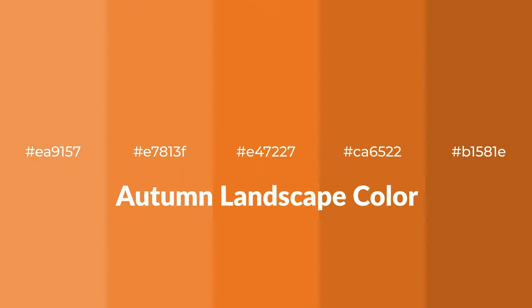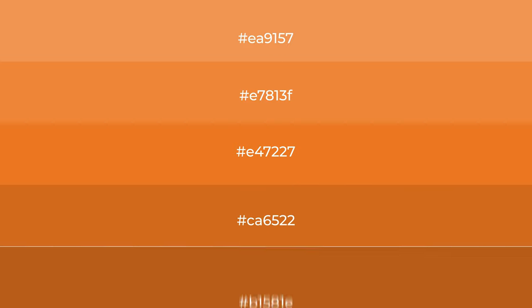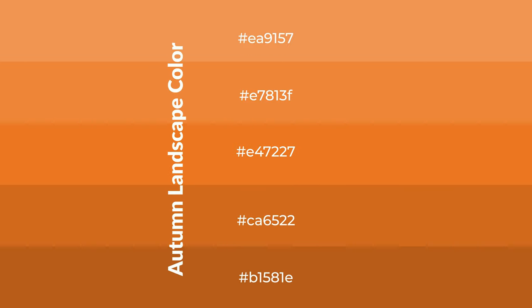Warm shades of autumn landscape color with orange hue for your next project. To generate tints of a color we add white to the color, and tints create light and exquisite emotions. To generate shades of a color we add black to the color, and it is used in patterns, 3D effects, and layers. Shades create depth and drama.